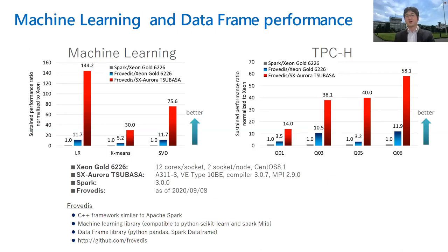Let's also talk about machine learning and data frames. We used an open source library called Robidus, which supports machine learning and data frame libraries. The left chart shows three machine learning examples: logistic regression, k-means, and SVD — singular value decomposition. The right chart shows TPCH benchmark results for data frame performance. Again, vector processors — the red bars — are doing very well.